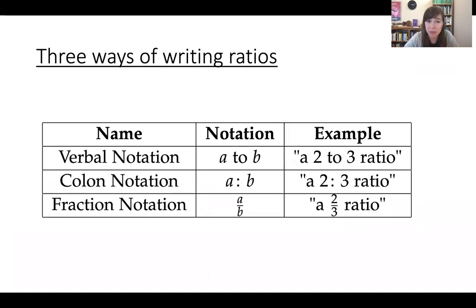Now we have three ways of writing ratios that we see in your book, and in fact this table is just pulled directly from your book. The first two ways, verbal notation and colon notation, are what you would generally see if you were reading a newspaper and you saw a ratio given. So if you're comparing two quantities, a and b, then in verbal notation that would just be written a to b.